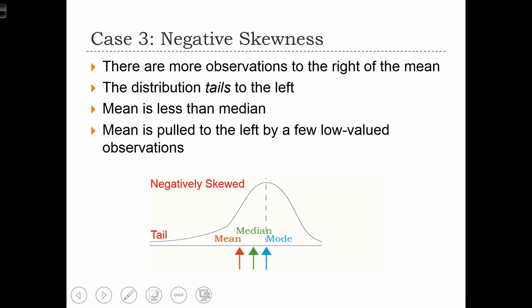The third case is negative skewness. Here, there are actually more observations to the right of the mean, but the distribution tails off to the left, and the mean is less than the median because it's being pulled to the left by a few but very low-valued observations in the left-hand tail.